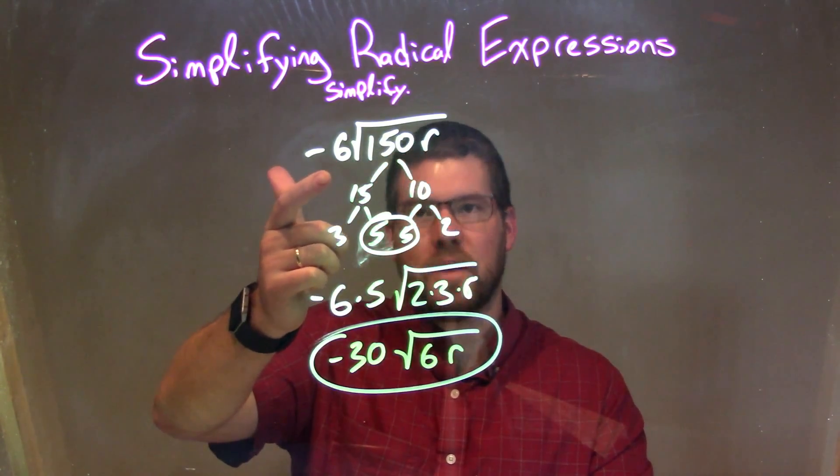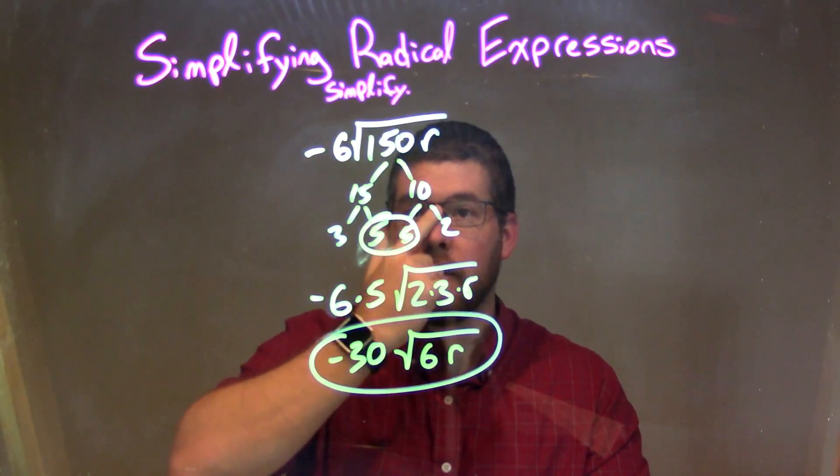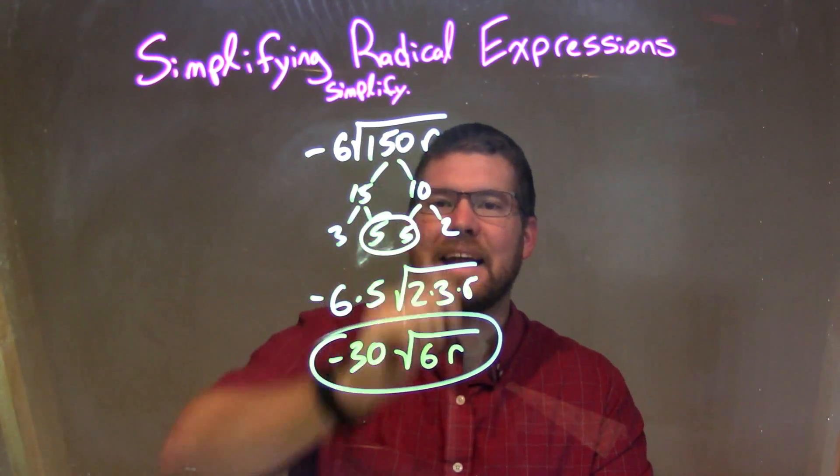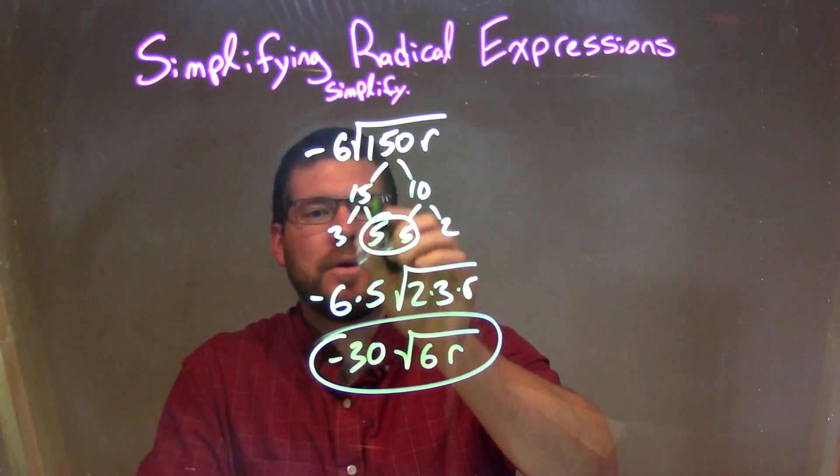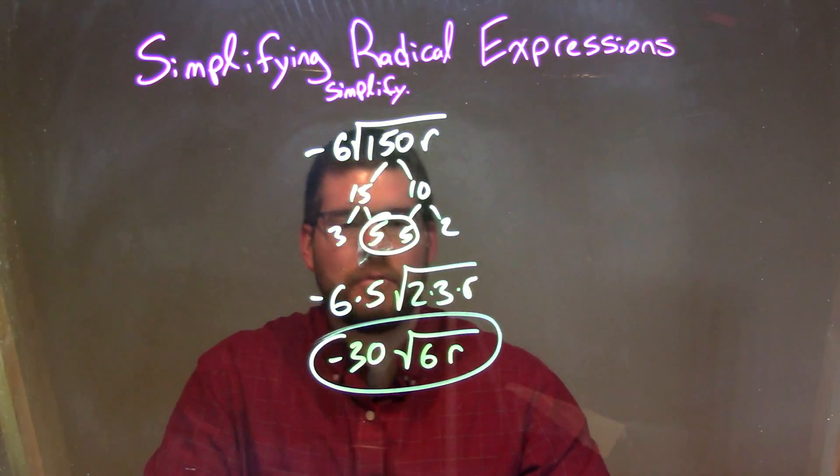So let's recap. We're given negative 6 times the square root of 150R. 150 breaks down to be 15 and 10, and 15 and 10 break down to be 3 and 5, and 5 and 2, respectively.